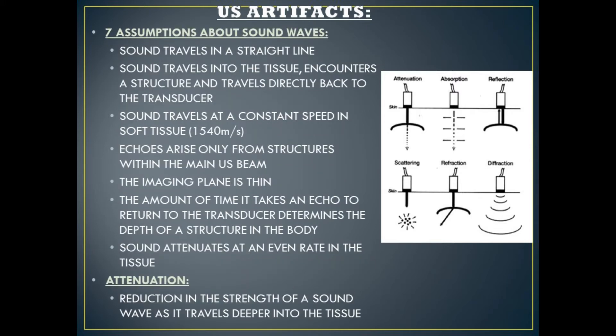An ultrasound machine makes seven assumptions about sound waves. Number one, sound travels in a straight line. Number two, sound travels into the tissue, encounters a structure, and travels directly back to the transducer. Number three, sound travels at a constant speed in soft tissue: 1540 meters per second.